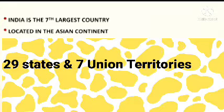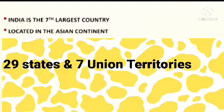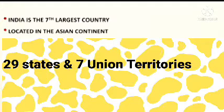India is a vast country. It is the seventh largest country in the world and is located in the continent of Asia. To govern such a huge country, India is divided into smaller units called states and Union Territories. India is also home to diverse geographical features such as landforms, water bodies, climate, soil, and vegetation.